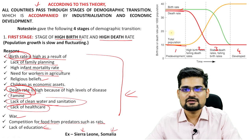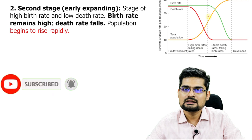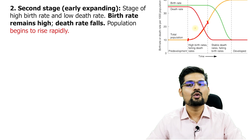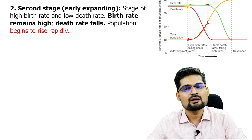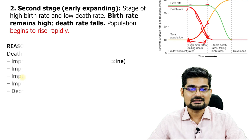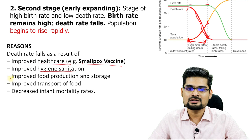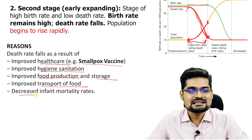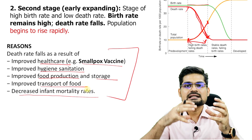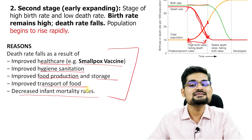Stage 2 is the early expanding phase. Total population now rises because birth rate remains high while death rate gradually falls. Death rate declines due to improved healthcare — including smallpox vaccines and other vaccinations — improved hygiene and sanitation, improved food production and storage, improved transportation, and decreased infant mortality rates. Birth rate does not fall, creating a gap between birth rate and death rate, which is precisely why total population rises in this early expanding phase.